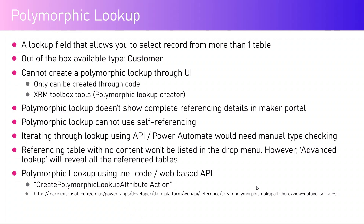Polymorphic lookup doesn't show complete referencing details in the Maker Portal — for example, the customer data type won't show complete information there. Polymorphic lookup also cannot use self-referencing, meaning you cannot point the data type to the same table itself. Additionally, iterating through the lookup using an API or Power Automate requires manual type checking at runtime to determine what kind of data the column is referring to before proceeding with further instructions.